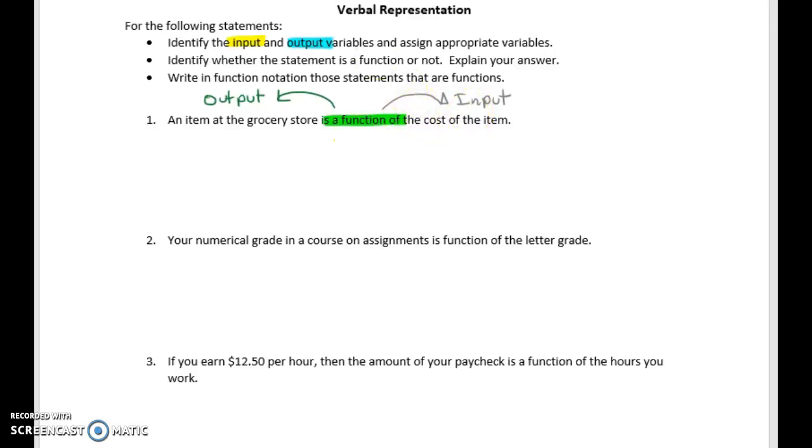In this case, we know that the input is going to be the cost of the item. And again, I'm using that yellow to indicate input. And the output is an item in the grocery store. It's very important that you identify these. It's very nice to use different color highlighters to help you identify those things.